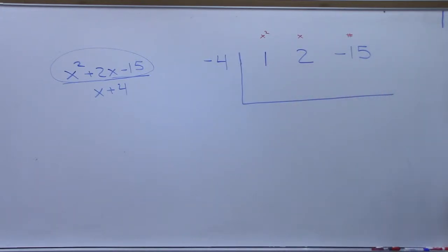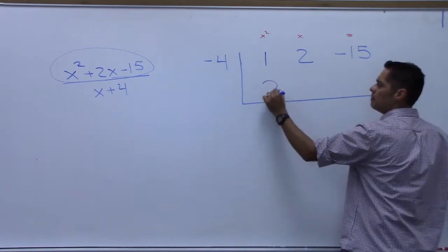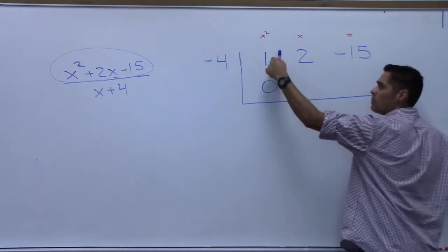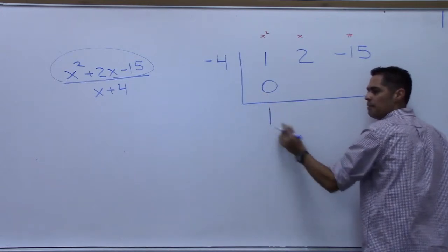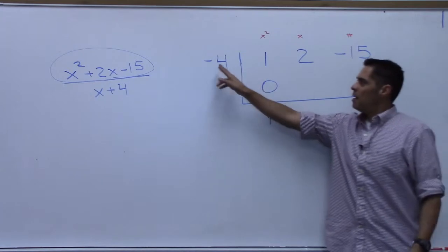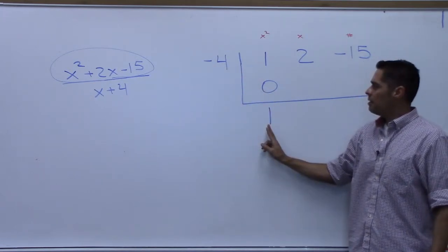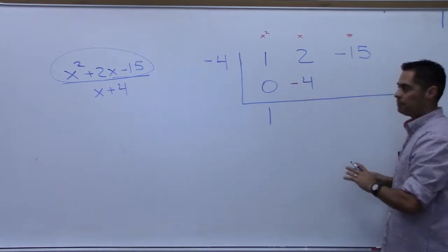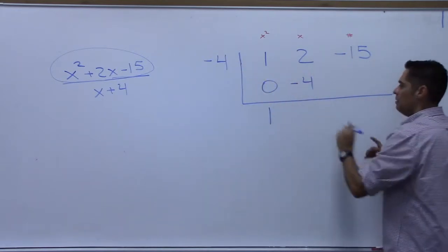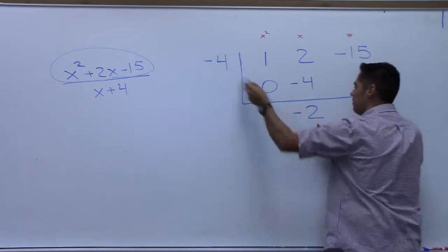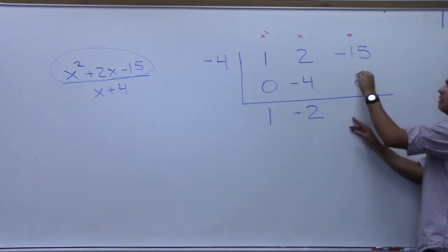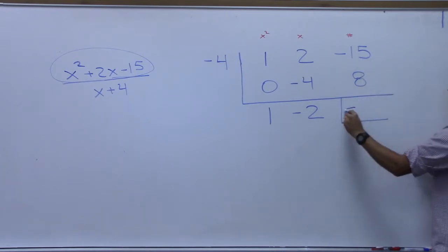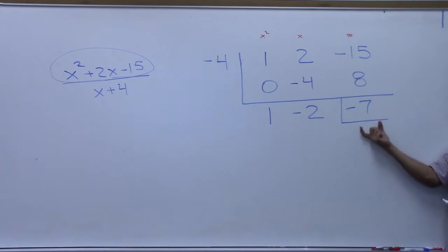Put a zero under the 1 and add straight down - 1 plus 0 is 1. Then multiply negative 4 times 1, that's negative 4. Put it underneath the 2, add down to get negative 2. Then multiply negative 4 times negative 2, that's 8. Put that back up and add down to get negative 7. This number is always your remainder. Was that the remainder we got earlier? Yes.